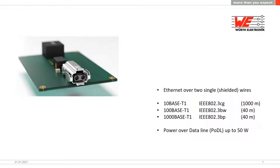The long cable reach of 10BASE-T1 makes single pair Ethernet very interesting for industry — going from the cloud to the field level over very large distances. Standard Ethernet reaches 100 meters. Power over Ethernet supplies devices like cameras over the same cable, and the equivalent for SPE is Power over Data Line (PoDL), supplying up to 50 watts, with hybrid versions enabling up to 200 watts.